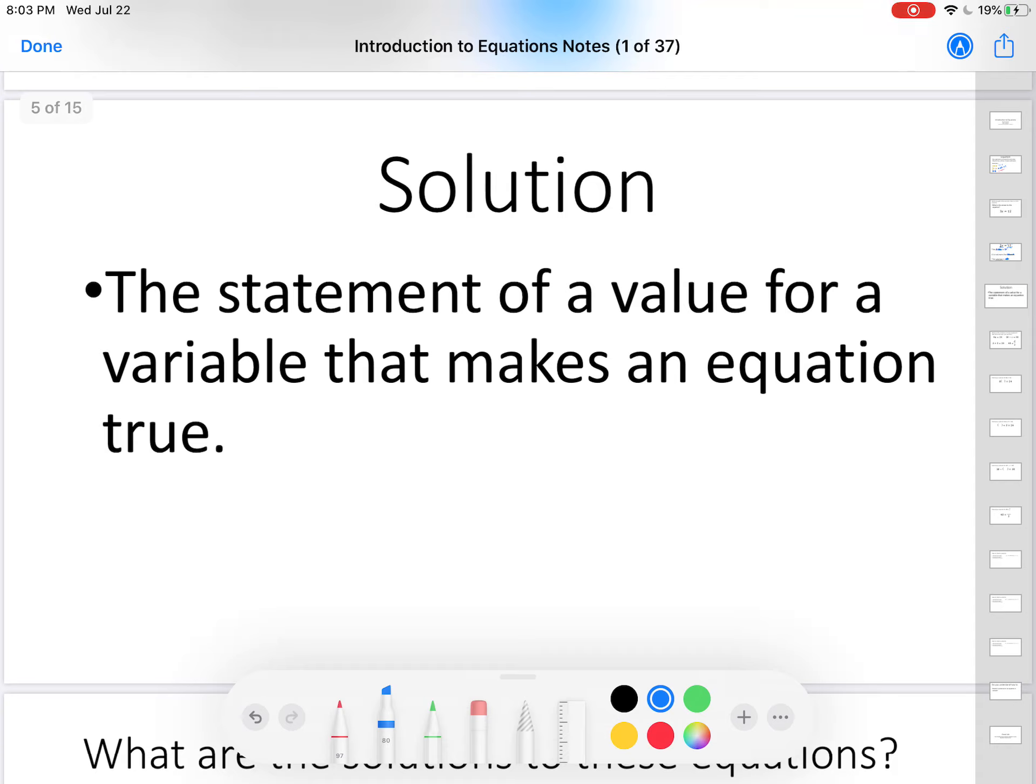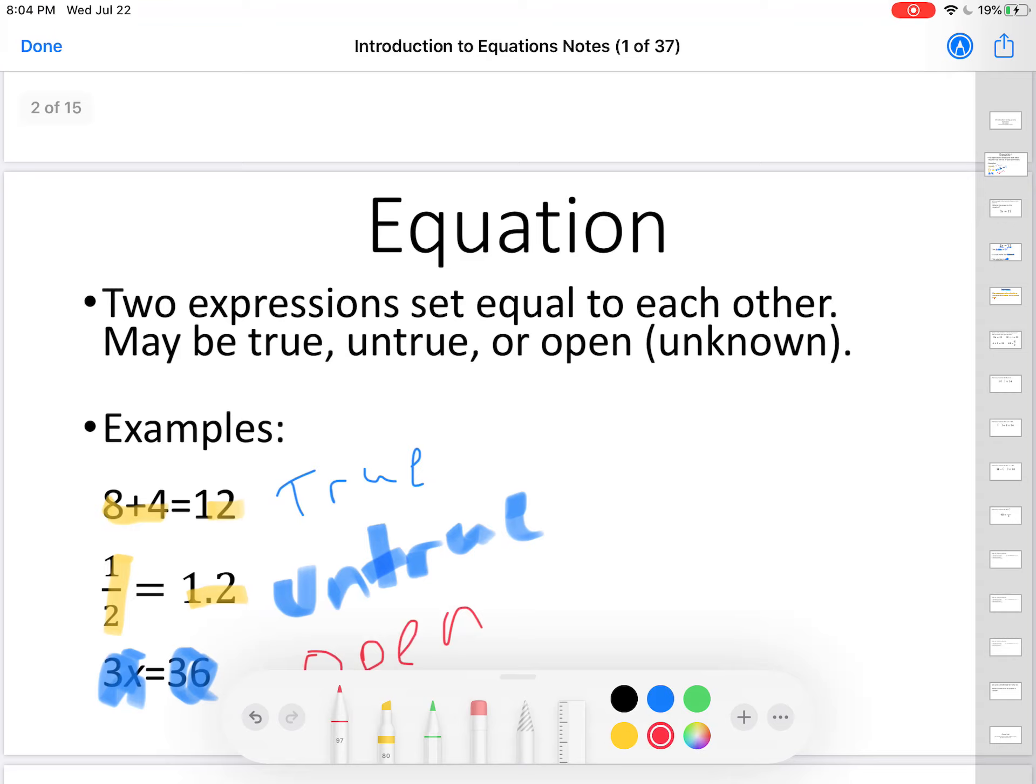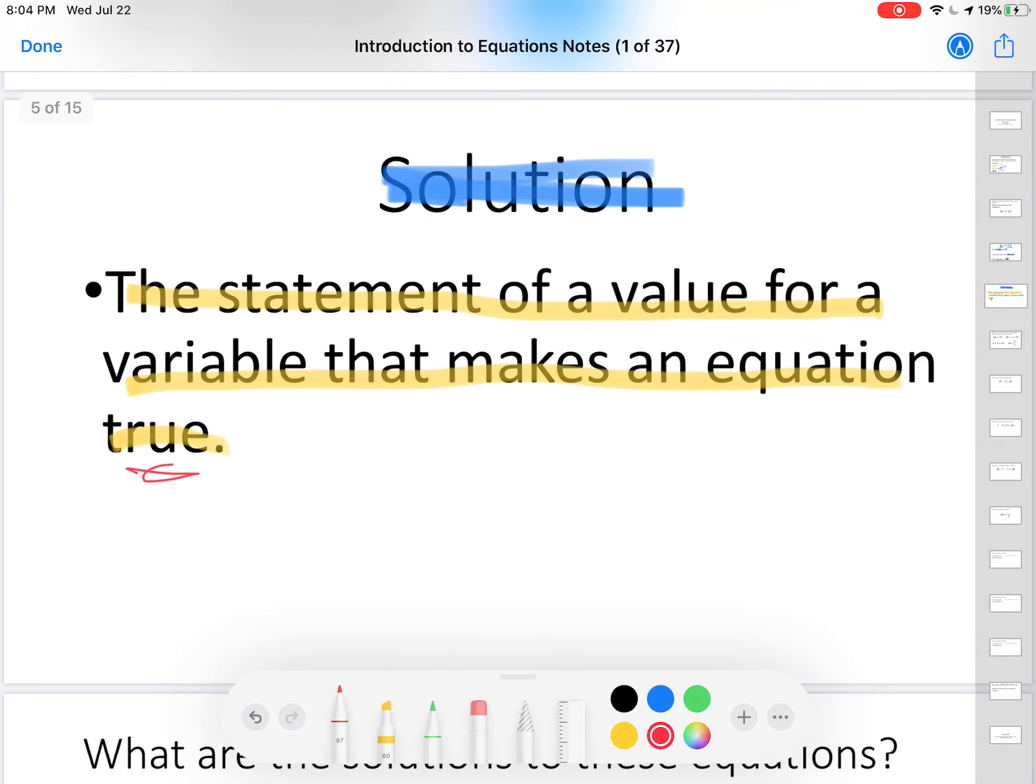That's what a solution is. Here's the definition. Solution. The statement of a value for a variable that makes the equation true. So, remember how equations come in three different varieties? They come in true, untrue, or open. Well, when it's an open equation, if you find a value for the variable that makes it true, then that becomes a true equation rather than an open equation. You would say a equals 7, b equals negative 2.5, things like that.